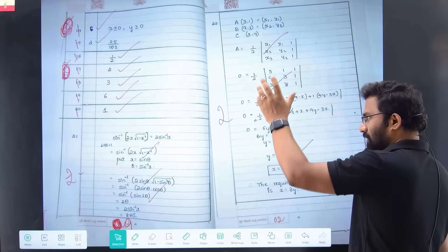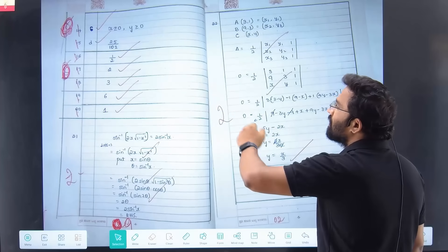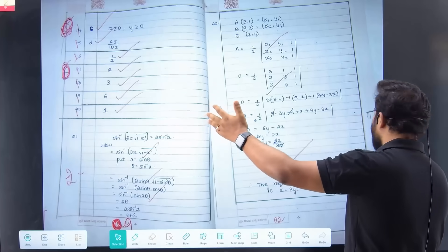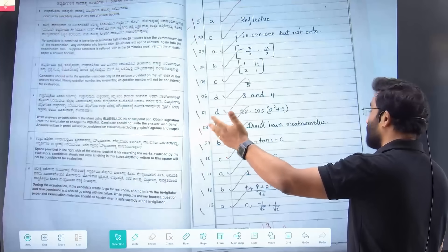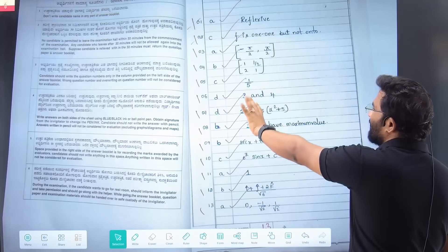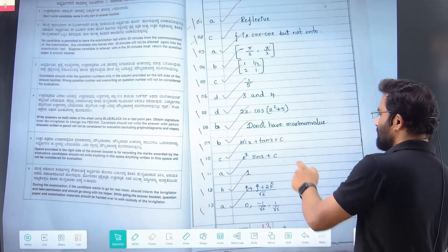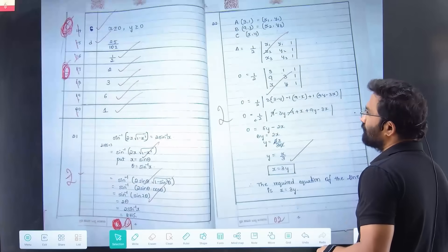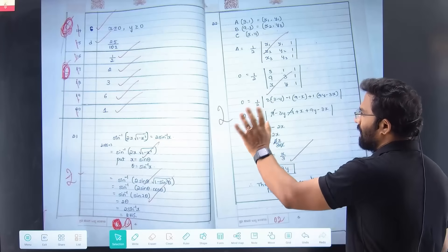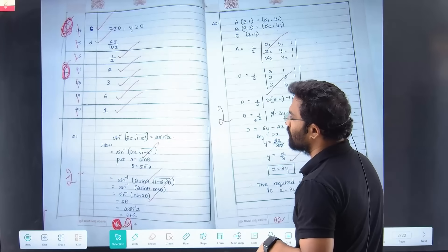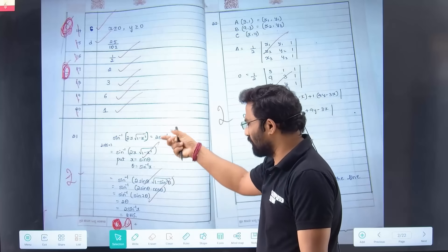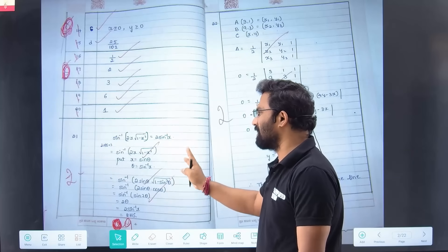You can see clearly this student has written everything in order. First MCQs, she has got full marks. For MCQs, just write the answer option, that's more than sufficient.